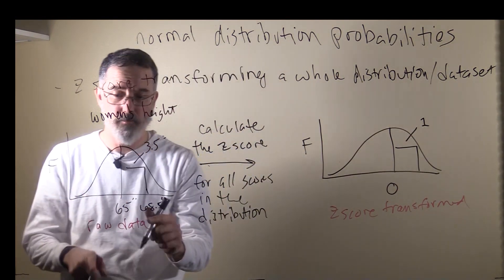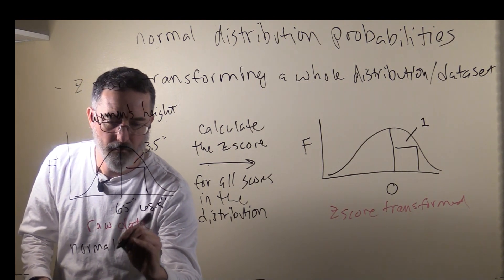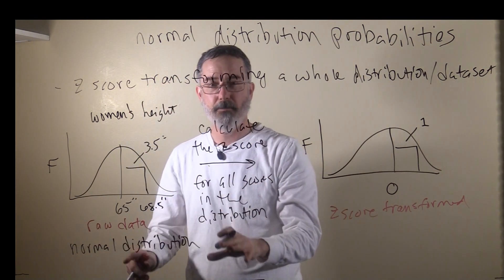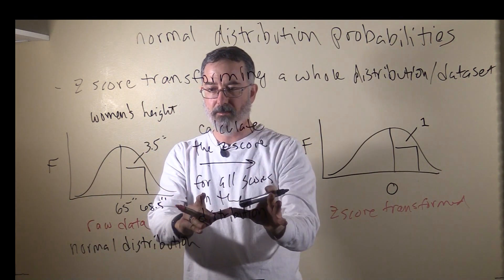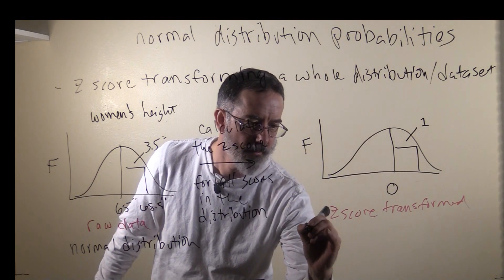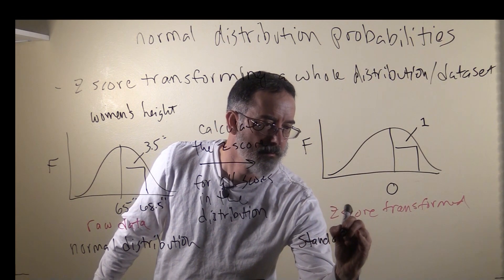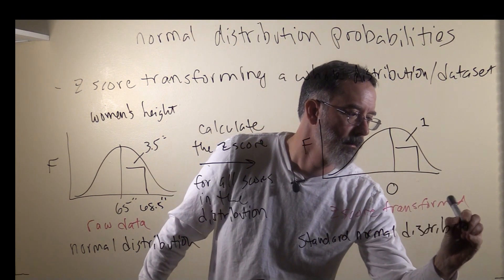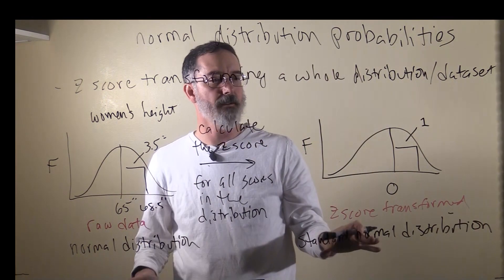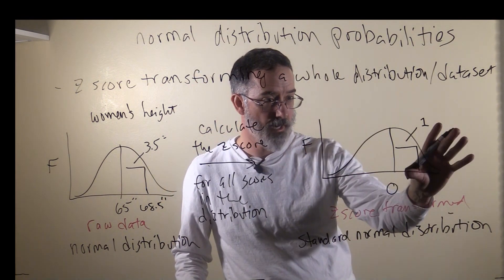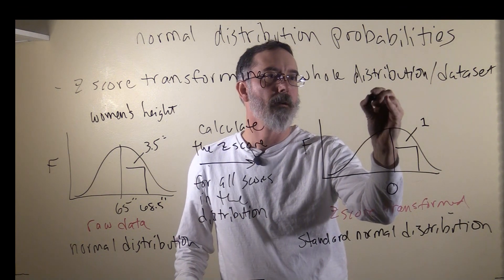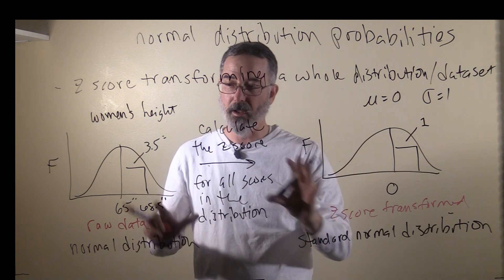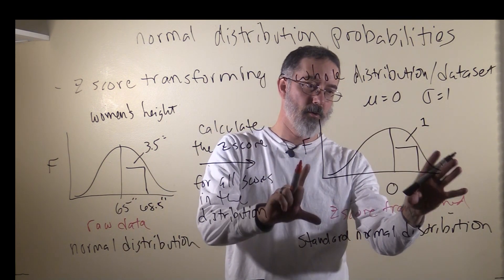This is a normal distribution. There are a lot of variables that have a normal distribution. But once you z-score transform any normal distribution, what you end up with is what is called a standard normal distribution. All standard normal distributions have a normal shape, a mean of 0, and a standard deviation of 1. Any normal distribution can be transformed into a standard normal distribution.